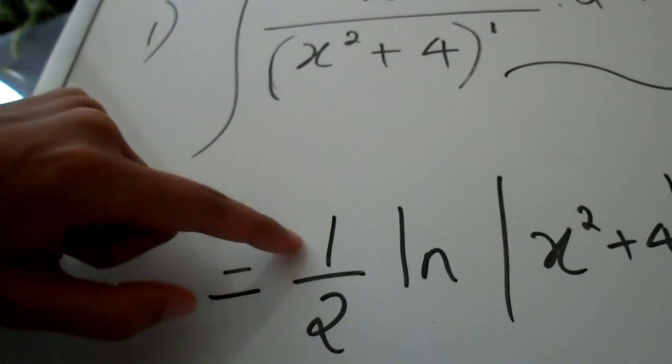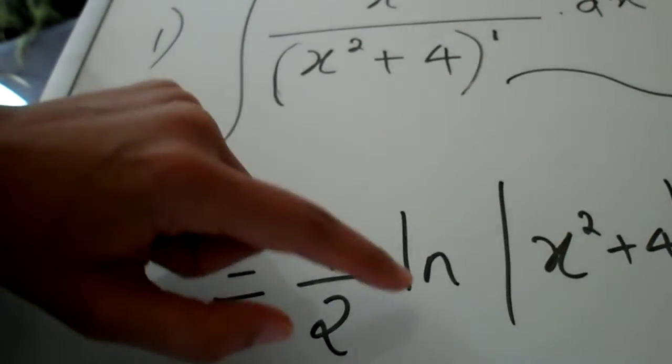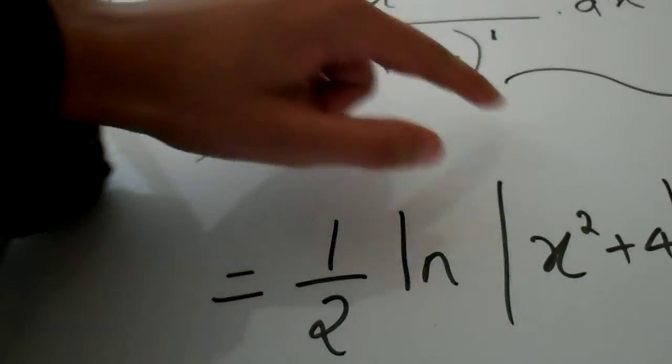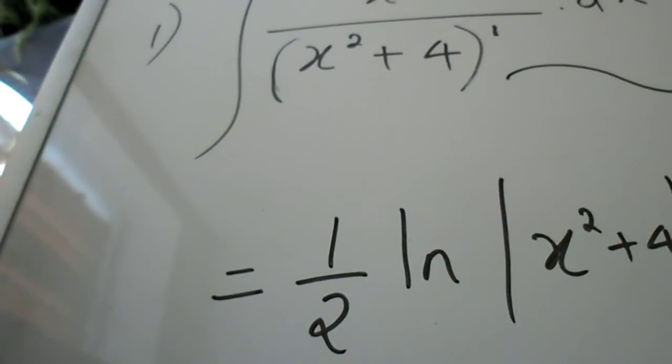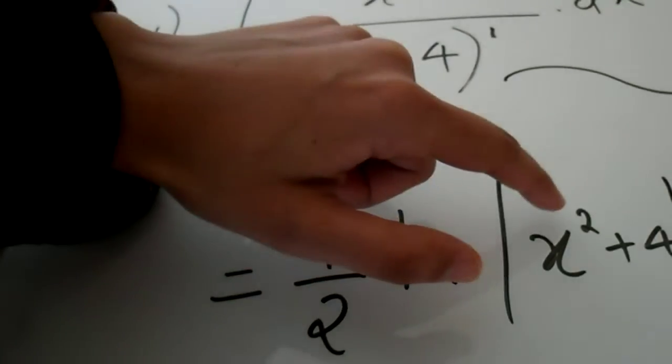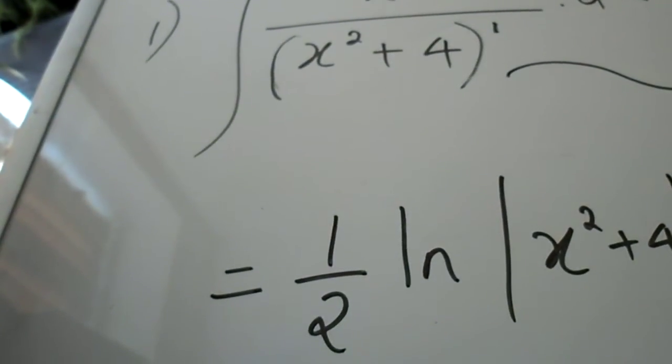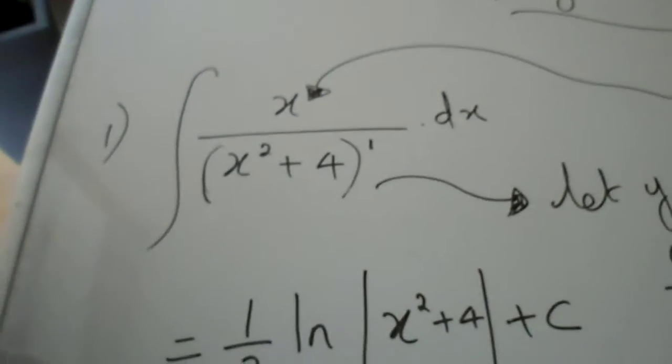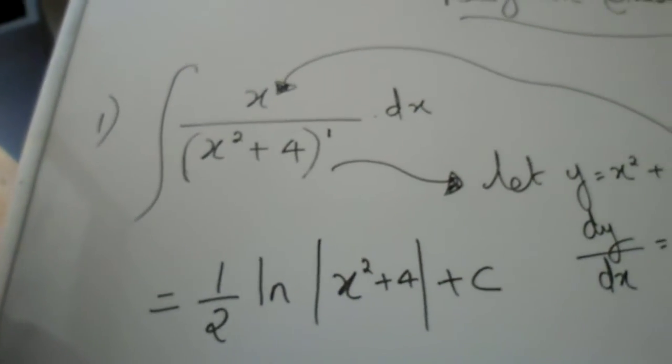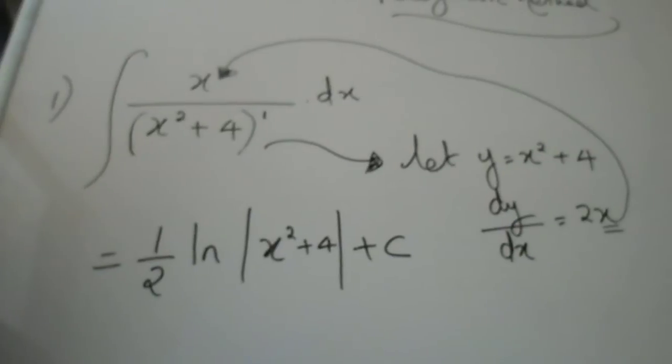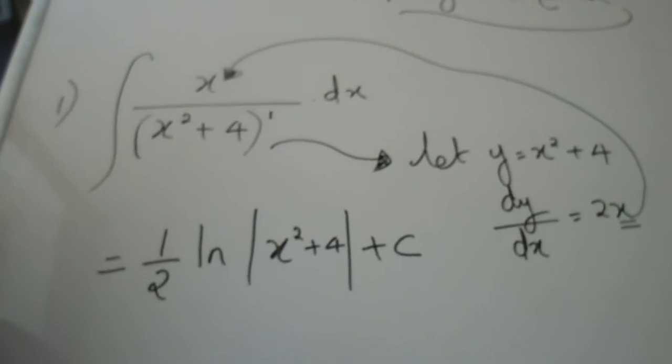So the final answer is just half ln. It's an ln function because the overall power in the denominator equals 1. So half ln of the denominator which is x squared plus 4 plus c. So that's the first type of question which you will encounter in the exam about the recognition method.